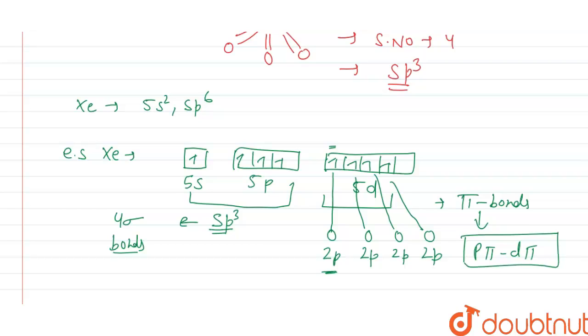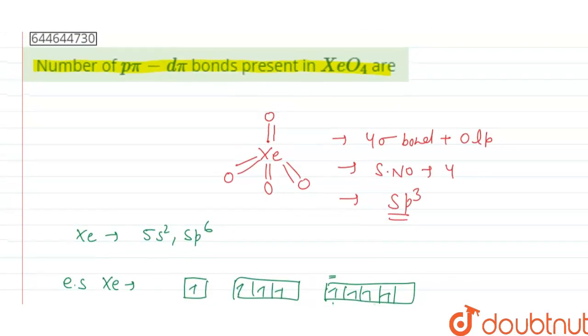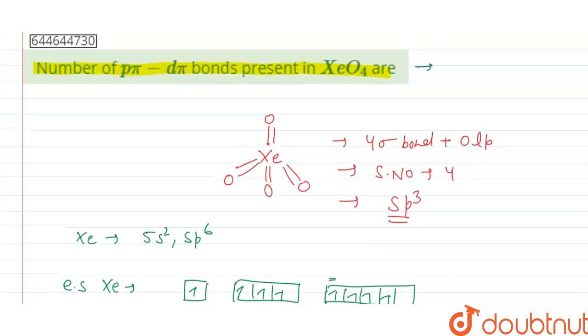So there are 4 p pi-d pi bonds in XeO4. The answer to this question is 4. I hope you understand. Thank you.